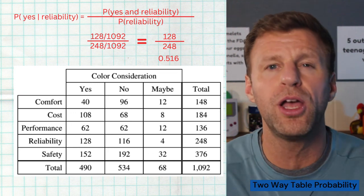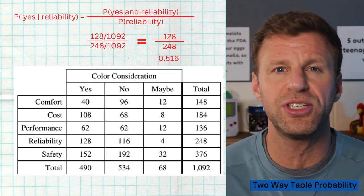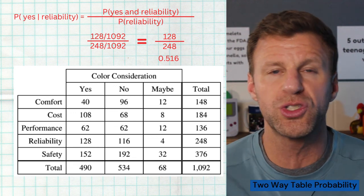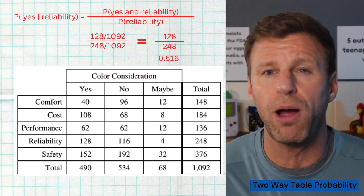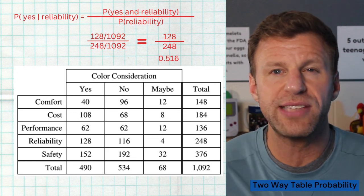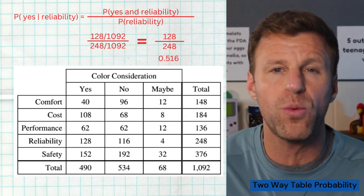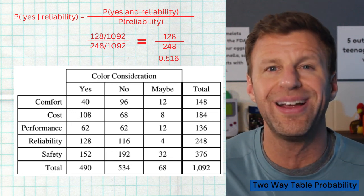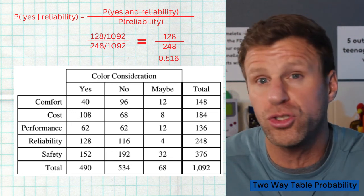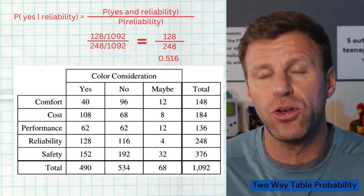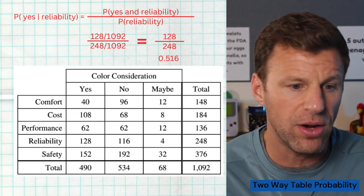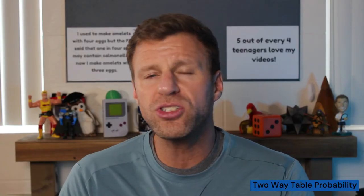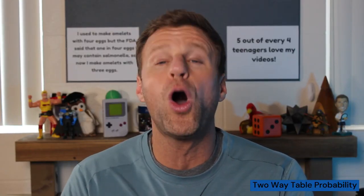The condition limits us to only the 248 people who said reliability. Out of those 248 people, 128 of them said yes. So the final answer is 128/248, or a probability of 0.516. These conditional questions coming out of a two-way table are extremely common and really important for you to know how to do on the AP exam.